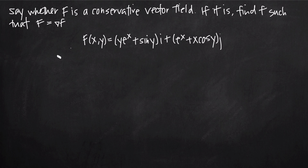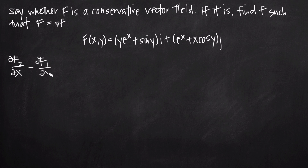The scalar curl of F is computed as the partial derivative of F sub 2 with respect to x, minus the partial derivative of F sub 1 with respect to y, set equal to zero. If this equals zero and F is defined everywhere in its domain, then we can show that F is a conservative vector field.